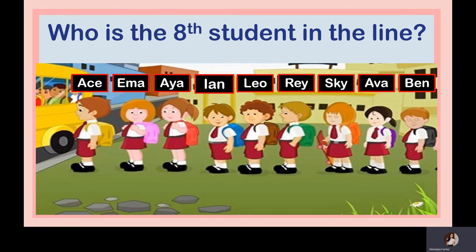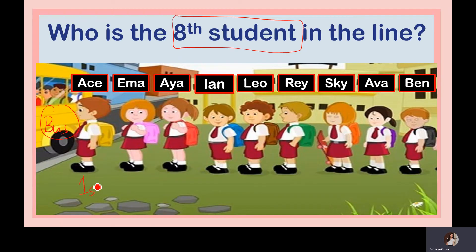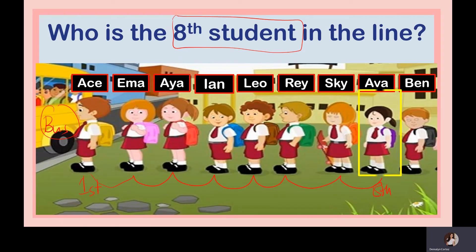Who is the eighth student in the line? The question says 'student' with no specific gender, so all students can be counted. The point of reference is the bus, so Ace is first. Counting: first, second, third, fourth, fifth, sixth, seventh, eighth. The eighth student in line is Ava.